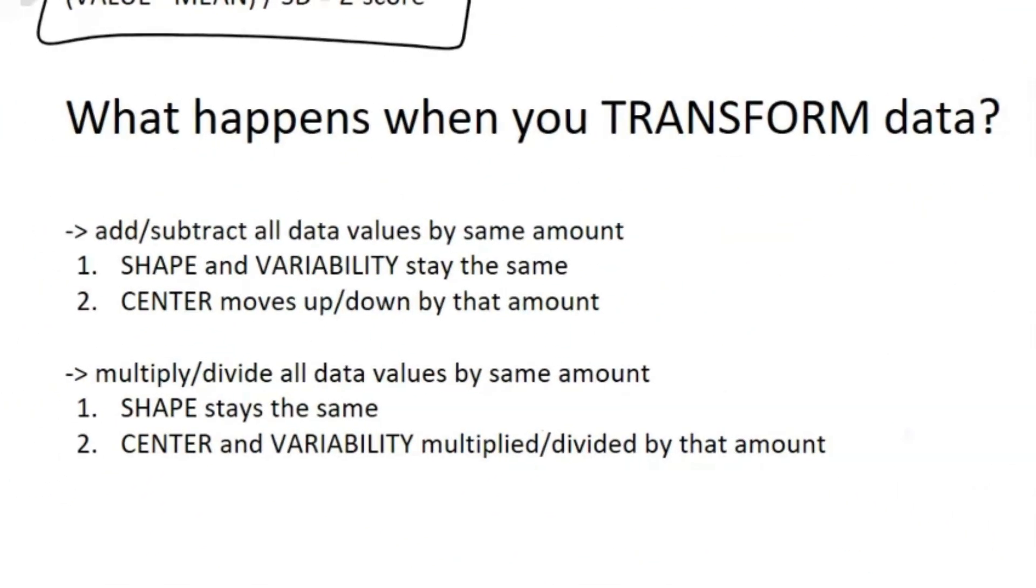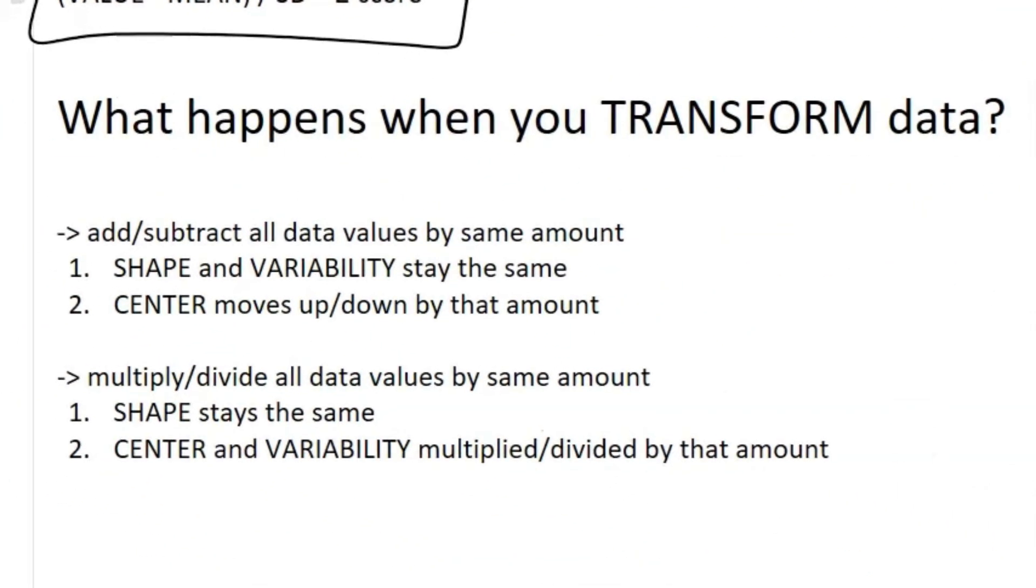Alright, so now we're going to talk about what happens when you transform data. Okay, so let's say you have a data set. What if you added a certain constant, like you added five to every single value, or maybe if you multiplied every value by 20? What would happen to the shape, the variability, and also the center?